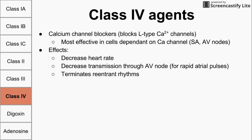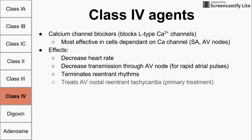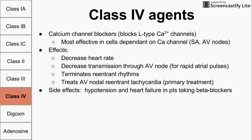Class 4 agents terminate reentrant rhythms such as AVNRT tachycardia, and that is their primary use. They do have side effects — they can cause hypotension and heart failure, particularly in people also taking beta blockers, as compounding these drugs can result in excessively low heart rate or blood pressure. Two drugs worth knowing are diltiazem and verapamil.